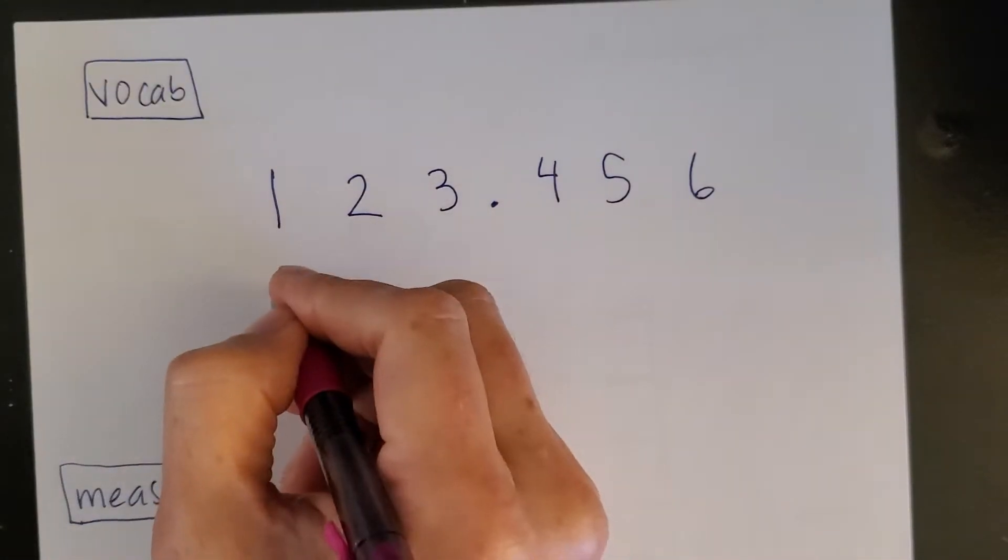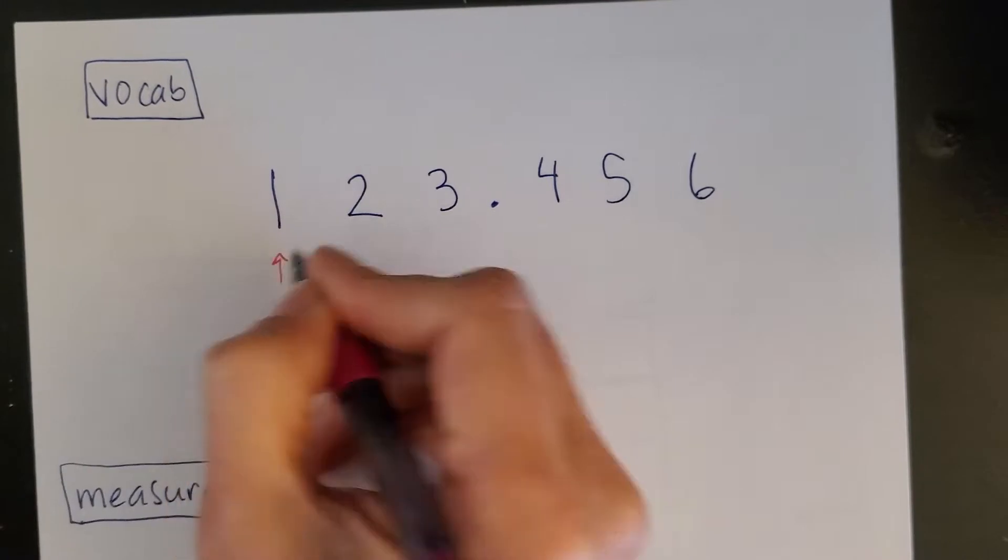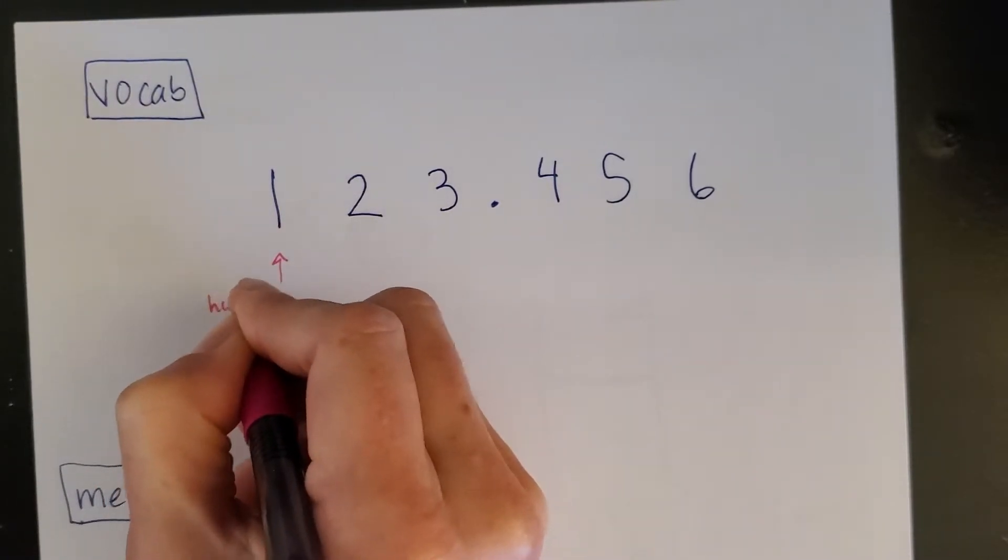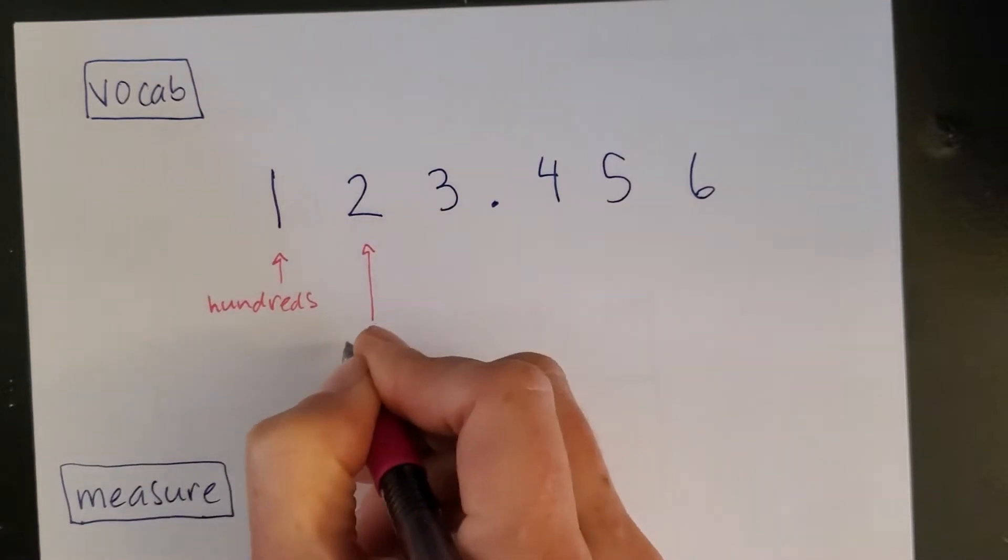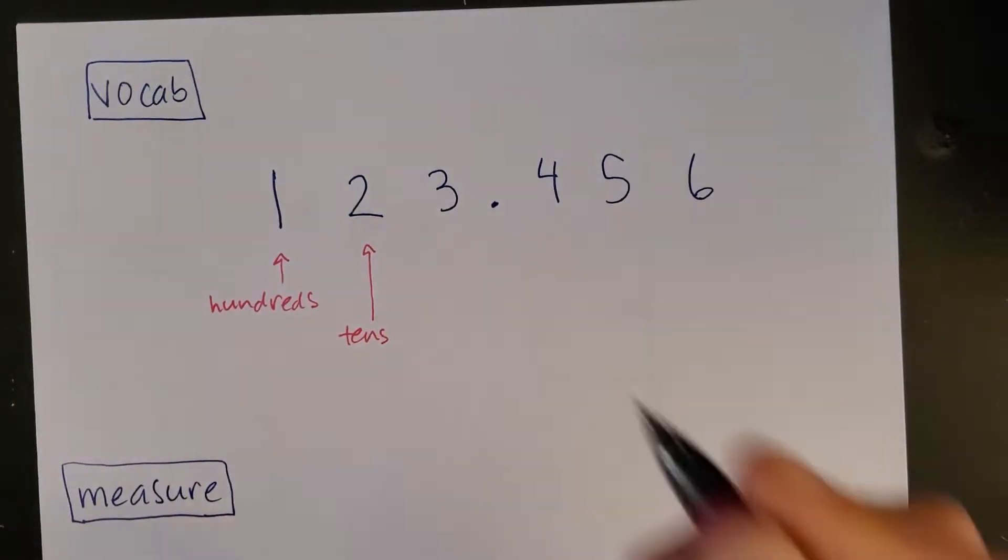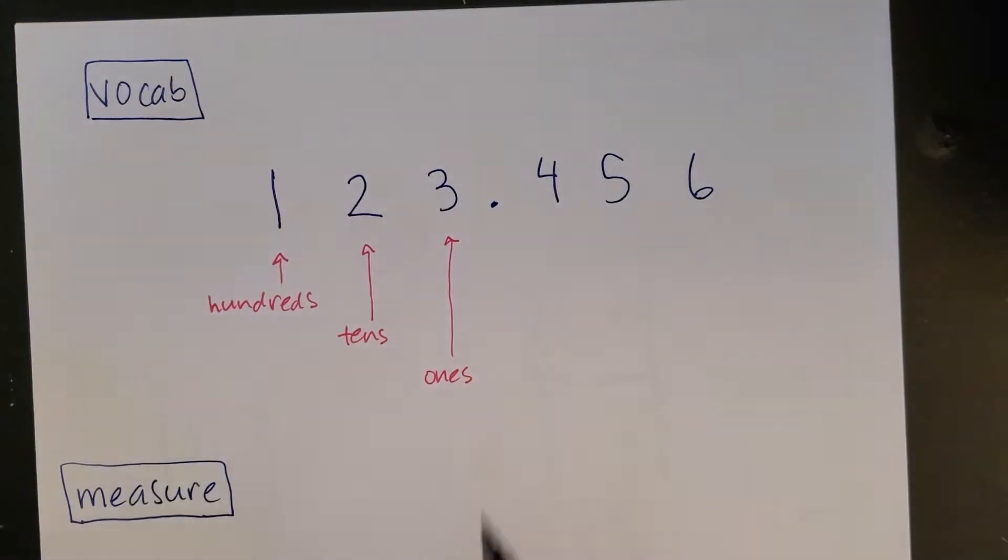First of all we want to make sure we have the right vocabulary as we measure. So we want to remember that in this number here, here's my decimal point, this one I would say is in the hundreds place. The two is in the tens place, the three is in the ones place, and you notice we're getting progressively smaller. That continues as we go to the right side of the decimal.